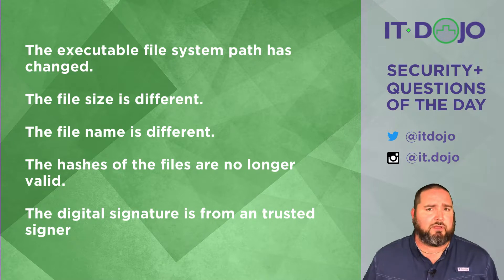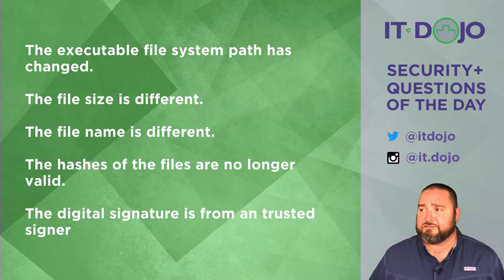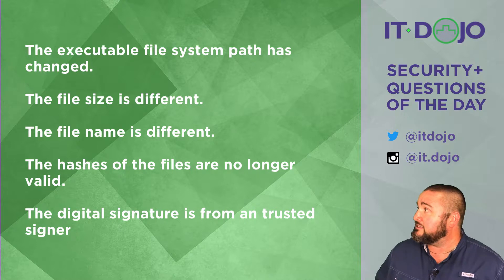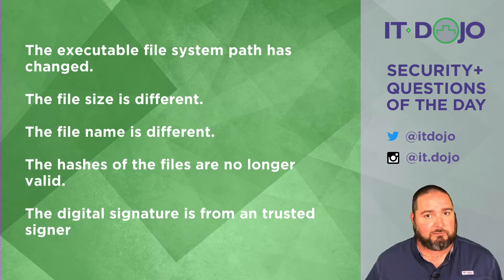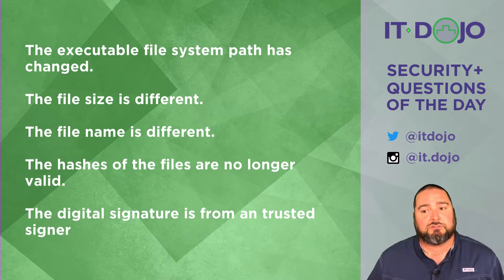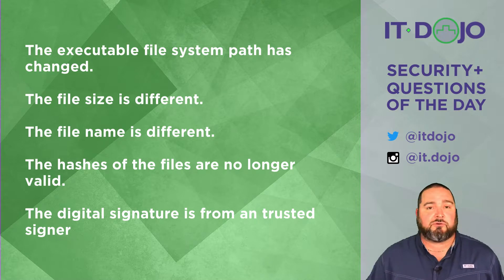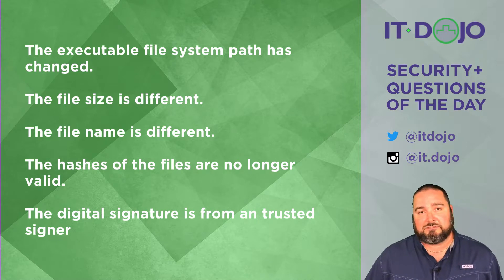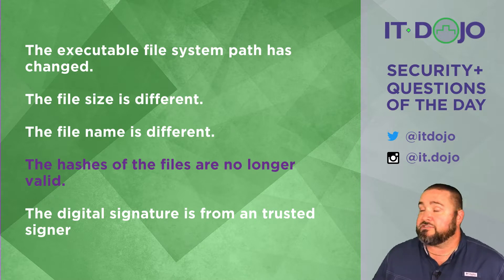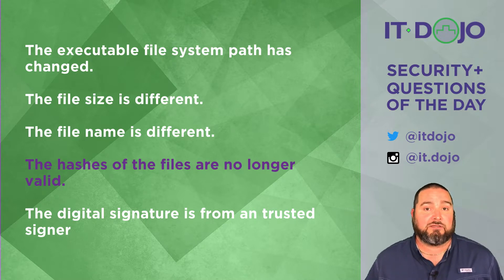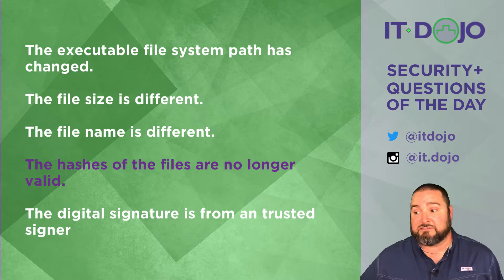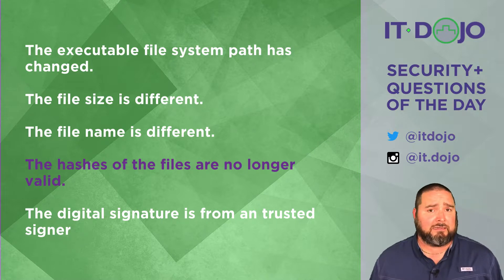First answer choice — the file system path has changed. Not our problem. Second answer choice — the file size has changed. Also not our problem. Third answer choice — the name on the file has changed. Not our problem. So one, two, and three are not going to be the right answers. The next answer, because we are doing cryptographic checksums, is likely to be the best answer: the hashes no longer match. In essence, the executable has been replaced. So when we go to hash it to validate its integrity, the system says 'not the right file' and therefore will not let this program run.